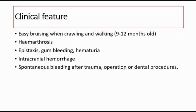The clinical features of hemophilia include easy bruising, noted when the infant is 9 to 12 months old when they are crawling and walking. They can also present with haemarthrosis, which is a special characteristic of hemophilia, and it normally affects large joints — for example, the knee, the ankle, and the elbow joint.